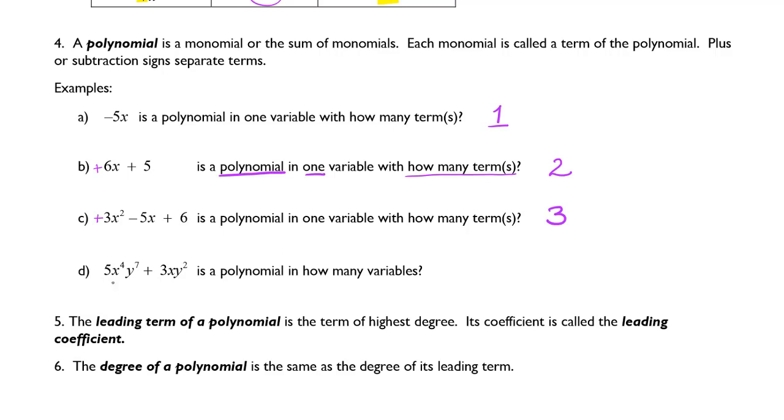And then for the last example, we have 5x to the 4th plus 3xy to the 7th plus 3xy to the 2nd is a polynomial in how many variables? There are 2 variables. Because we have an x and we have a y.